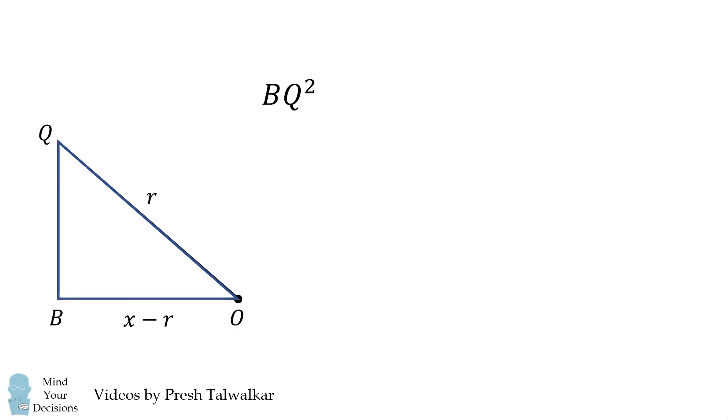We can solve for BQ using the Pythagorean theorem. BQ squared is equal to R squared minus the quantity X minus R squared. We'll simplify this a little bit and we get BQ squared is equal to 2XR minus X squared. We'll put this equation to the side.